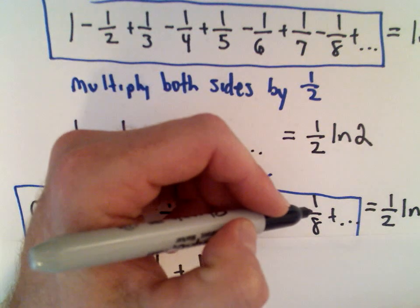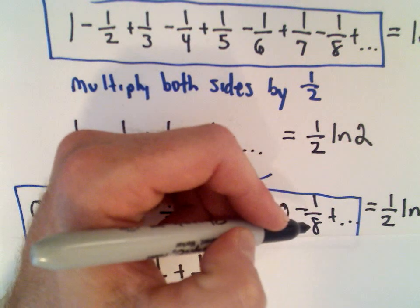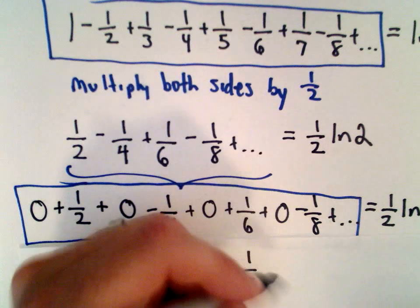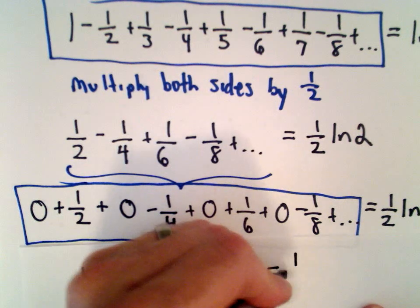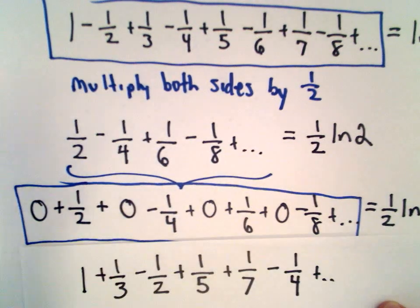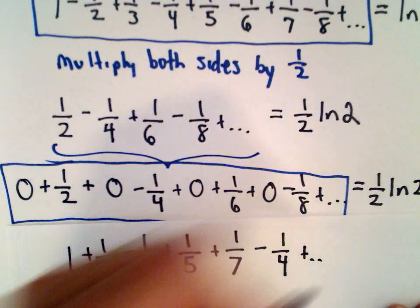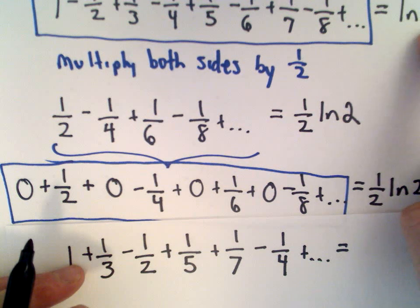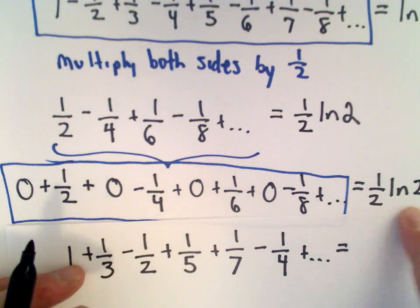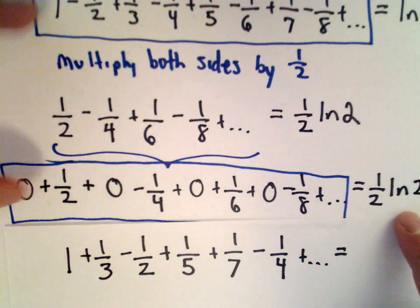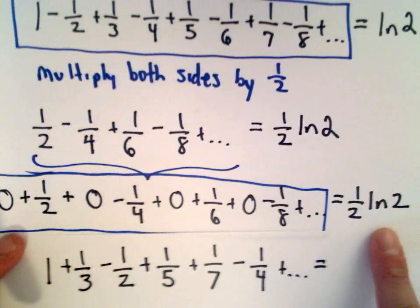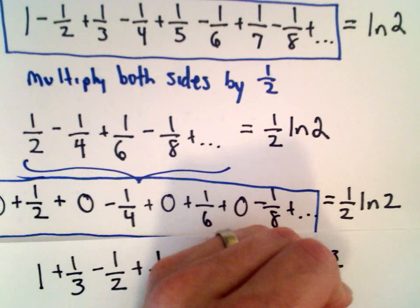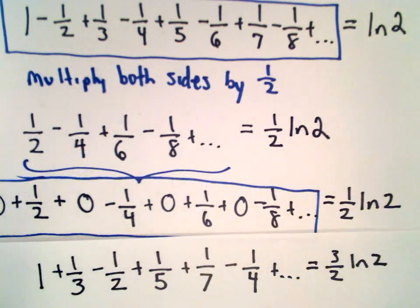The negative one-eighths cancel out. If you expand a little bit more, the next term is actually going to be negative one fourth, and you can keep checking the values. That's going to keep going. Now we've got the natural logarithm of two plus one half the natural logarithm of two — we've added these series on the left, so we add these values on the right. That gives us three over two multiplied by the natural logarithm of two.